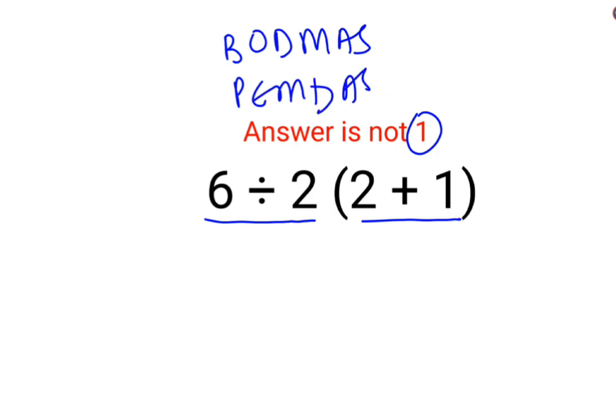Now, in both the cases, it's very important to realize that the first importance is given to brackets or parentheses. So we'll keep the rest of the question as it is. And 2 plus 1 is 3.